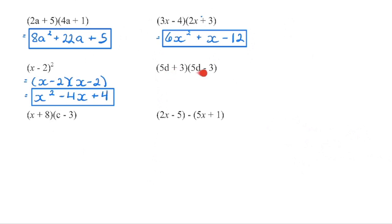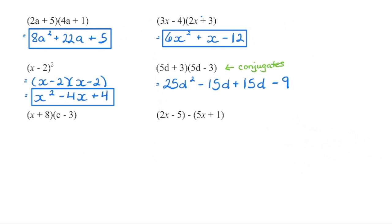This one is not a binomial squared. Here we have the same terms but a different sign — one is a plus, one is a minus. This is what we call conjugates. When we FOIL this out, 5d times 5d is 25d squared, then negative 15d plus 15d, and then negative 9. When we combine like terms, negative 15d plus 15d leaves us with 0d. So we're left with 25d squared minus 9.